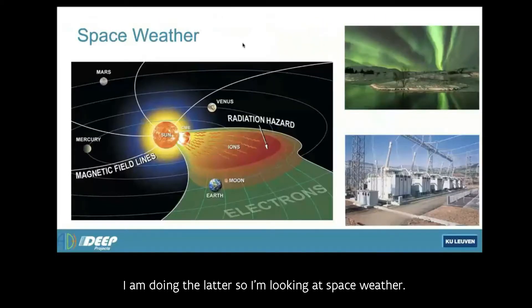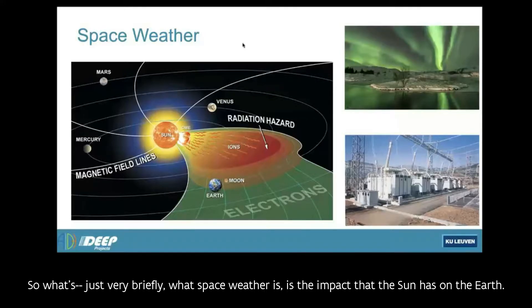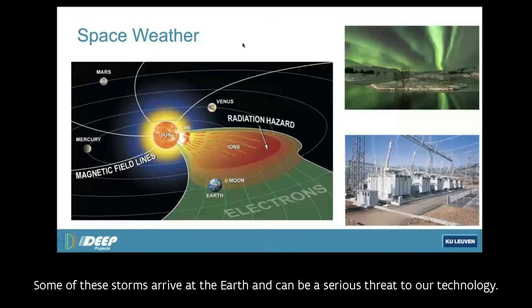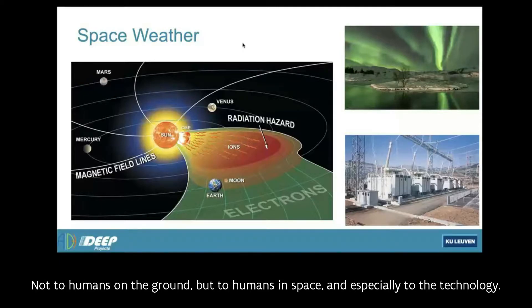I will do the latter. So I'm looking at space weather. So what space weather is, is the impact that the sun has on the earth. There's a continuous solar wind coming out of the sun. It's very dynamical and there are storms in it. Some of these storms arrive at the earth and can be a serious threat to our technology, not to humans on the ground, but to humans in space and especially to the technology.